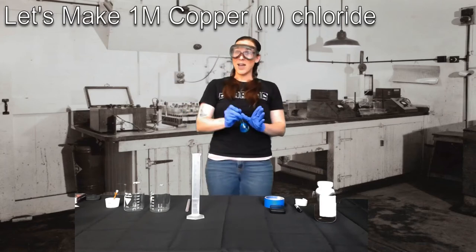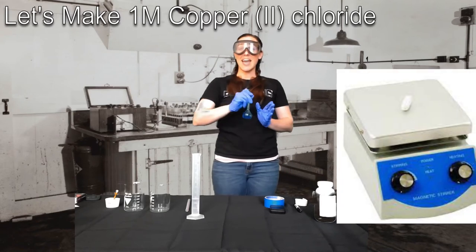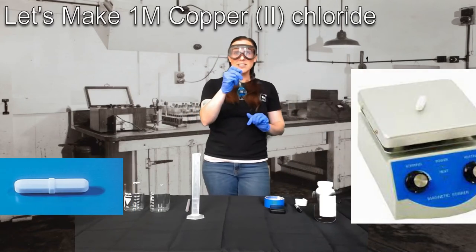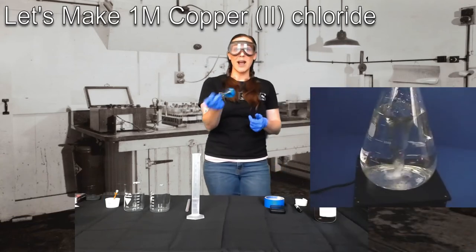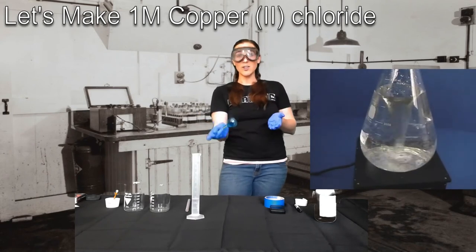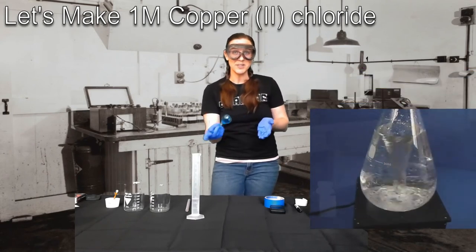Or, even better yet, if you have a magnetic stir plate and you have a little magnetic stir rod, you can plop one of those in there and have the magnetic stir spin it around for you. That, of course, would be the best option to make sure that all of your solute is evenly distributed throughout your solvent.